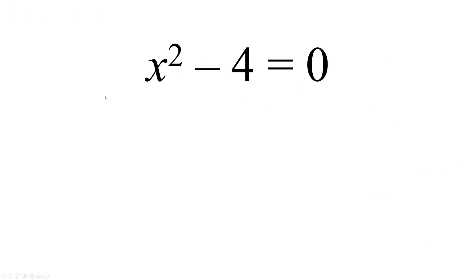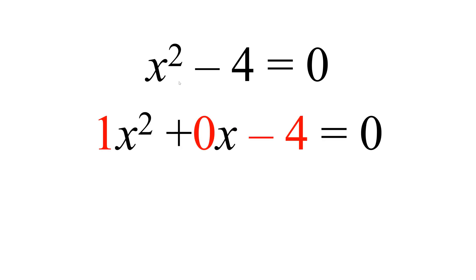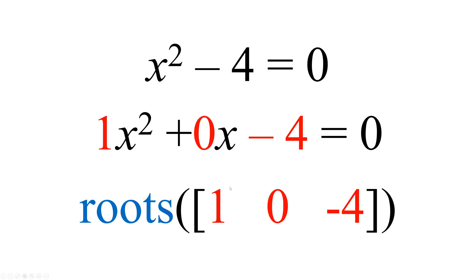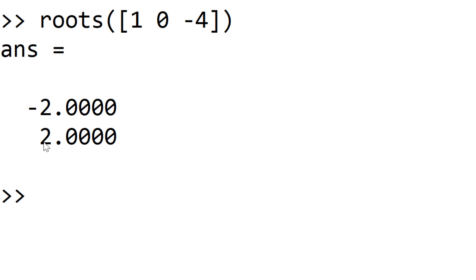What if we have a different form of quadratic equation? Let's say x squared minus 4 equal to zero. The issue here is that we don't have an x term. We need to properly express this in Octave and MATLAB. The key thing is how to express the missing x term in the row vector. Since we have coefficients 1, 0, and minus 4, we express it as roots([1 0 -4]). As expected, the solutions are x equal to minus 2 and x equal to 2.